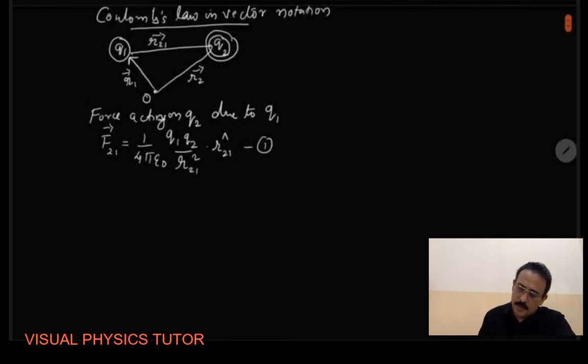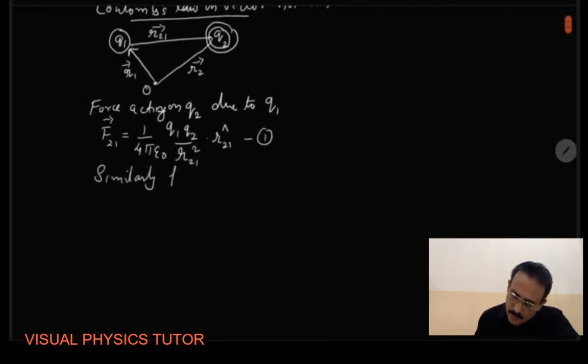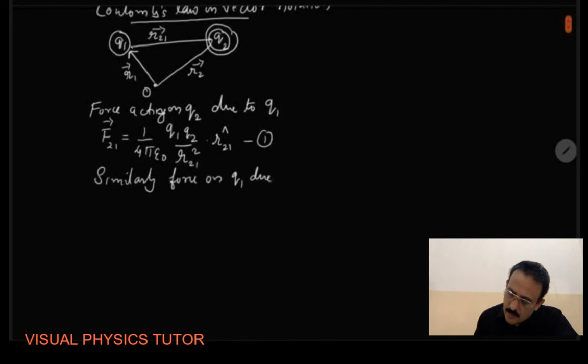Similarly, we can write the force on Q1 due to Q2. So it is force on Q1 due to Q2. So how do we write it as F vector 1 by 4 pi epsilon 0 q1 q2 by R12 square, again to put in the vector notation R12 cap. Now this is equation 2.